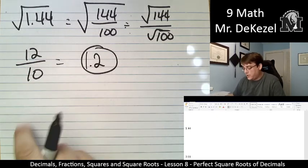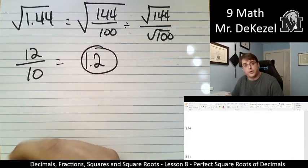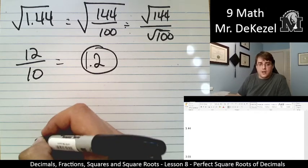If we just move the decimal place 1 over, because we're dividing by 10, we have 1.2. Let's do our last problem.